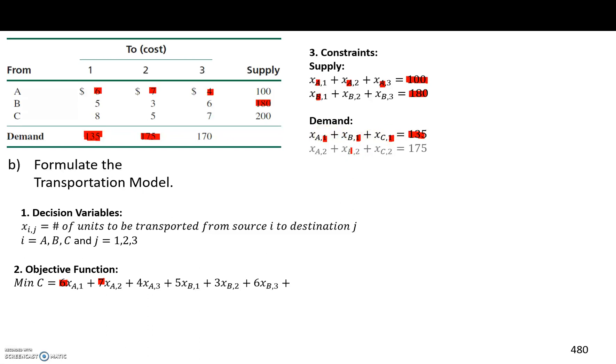Then we repeat the same for destination 2. So the number of units going from A to 2 plus the number of units going from B to 2 plus the number of units that goes from C to 2 should be 175.